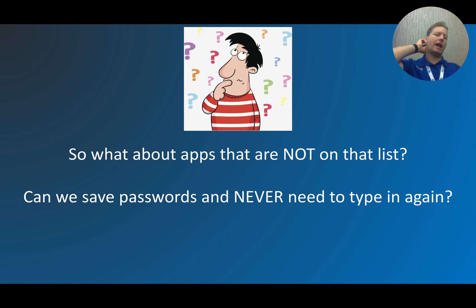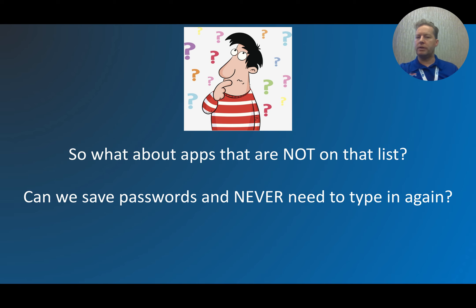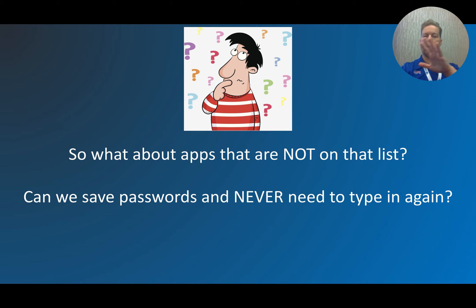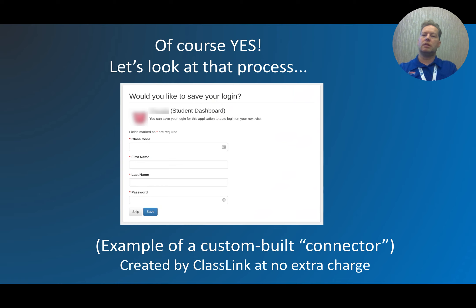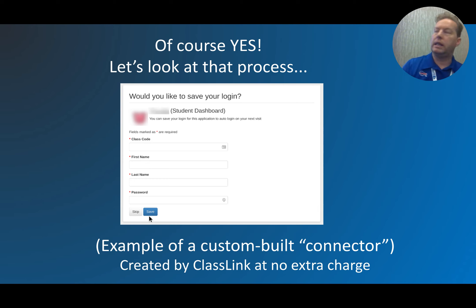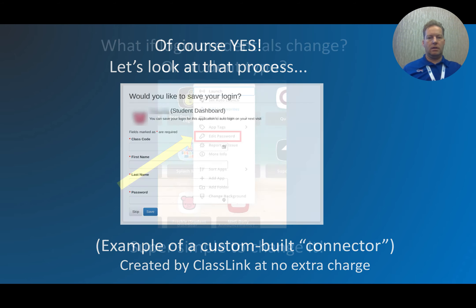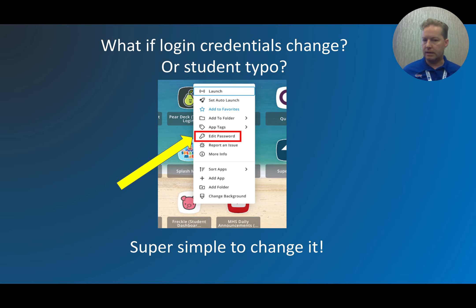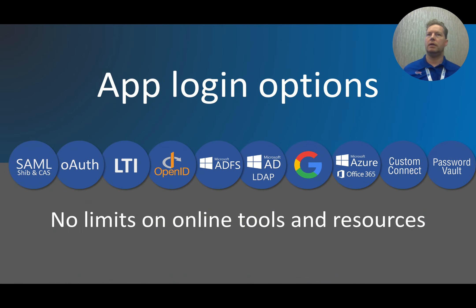What about apps that are not on the rostered list — can you save passwords so you never need to type them in again? ClassLink acts as your password manager, or password locker as they call it. A less tech-savvy teacher or a kid would struggle with a traditional password manager, but with ClassLink an elementary school teacher can type in the credentials and save them. From that point forward ClassLink holds those credentials — you right-click the icon, choose 'Edit Password,' enter the credentials, and it's saved.